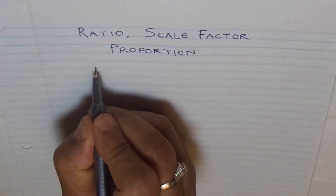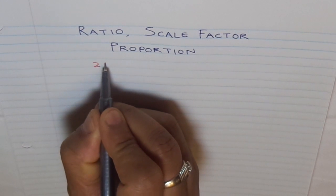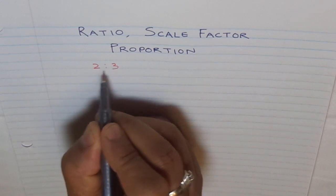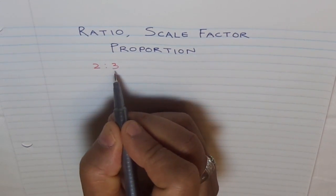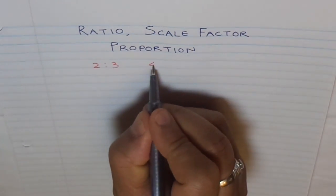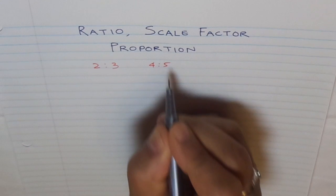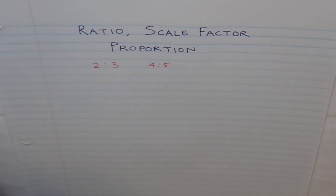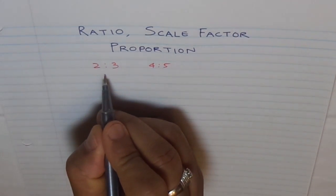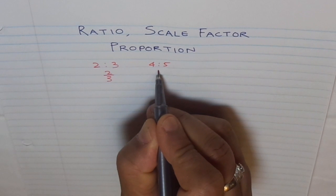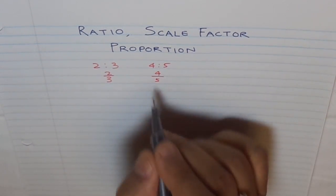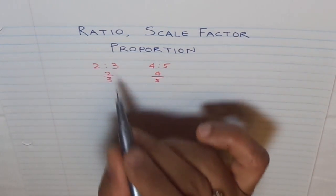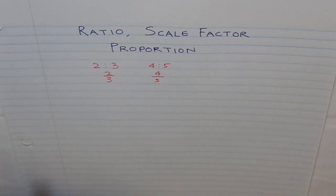When I write a ratio, I normally write it like this: 2 is to 3. That is the ratio — 2 to 3. These are different ways of saying this ratio. Or I could say 4 is to 5. When we write it like a fraction, we can write this as 2 over 3 and 4 over 5.